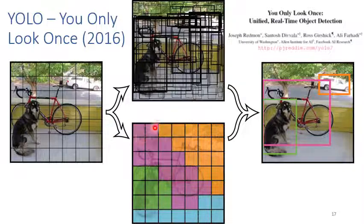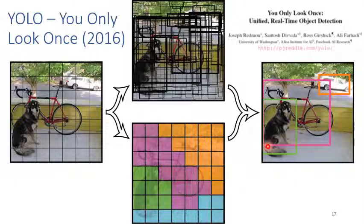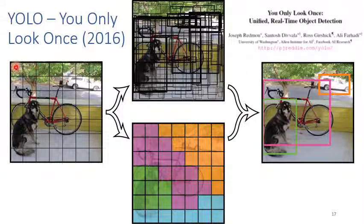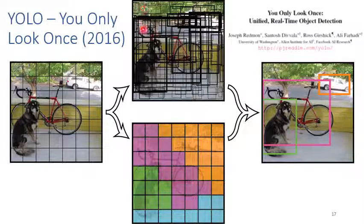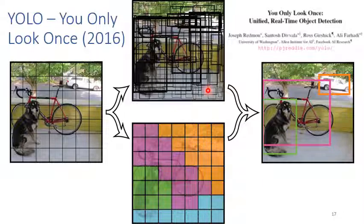Finally, it combines the overlapping bounding boxes based on the confidence score and class prediction. This is the final output of YOLO. In other words, YOLO replaces region proposal with a 7×7 grid. Each grid can predict two bounding boxes. By using this approach, it significantly reduces the number of object candidates to only 98 candidates — much faster than RCNN, with slightly lower accuracy.